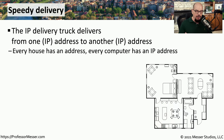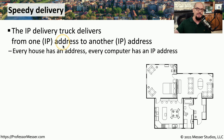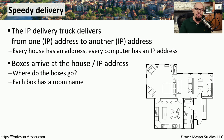So now we've got our moving truck, and there is a box inside of the moving truck that has an address on it. In the case of our networks, it's an IP address. In the case of an actual moving truck, it's a physical address of a particular house. In the case of our IP moving truck, the truck looks at the destination IP address and is able to drive to that particular location.